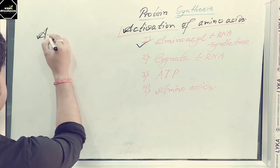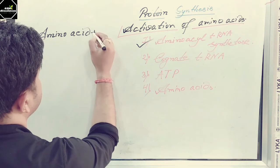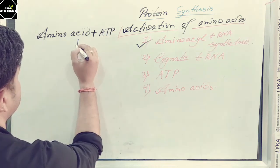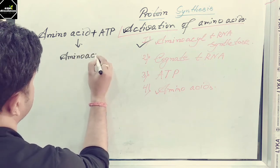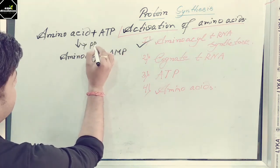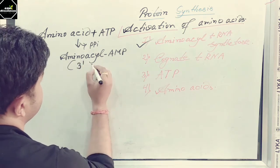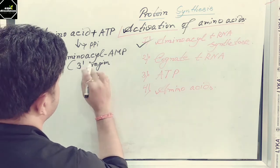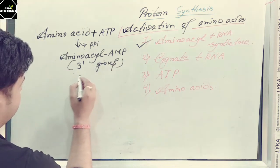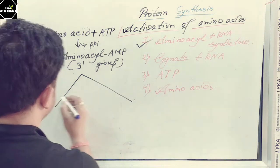So: amino acid plus ATP generates aminoacyl-AMP. Two pyrophosphate (PPi) molecules leave from this reaction, and the amino acid is activated at the 3' group. This aminoacyl-AMP can then go in two ways — because the enzyme aminoacyl-tRNA synthetase is of two classes.